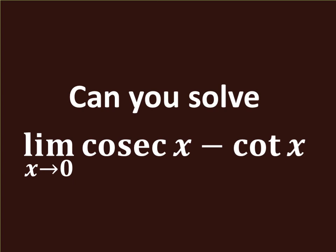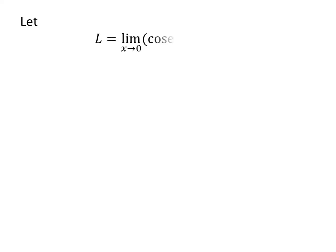In this video, we will learn to find the limit of cosecant of x minus cotangent of x as x approaches 0. Let us assume L is the limit of cosecant of x minus cotangent of x as x approaches 0.